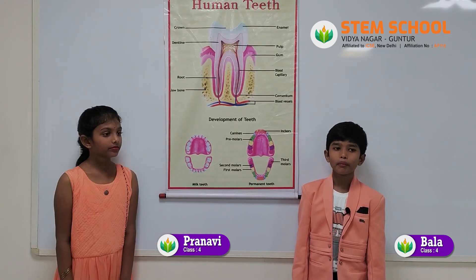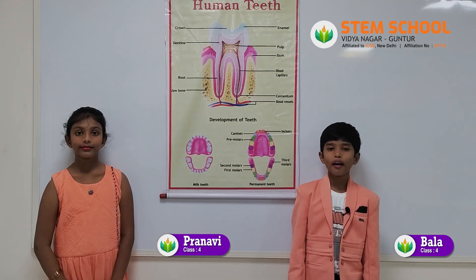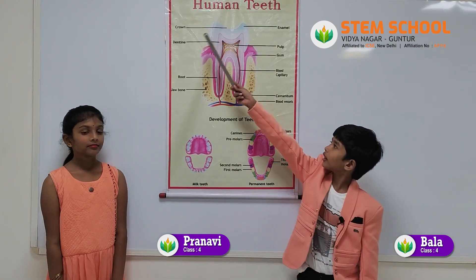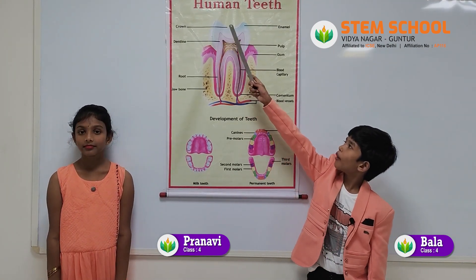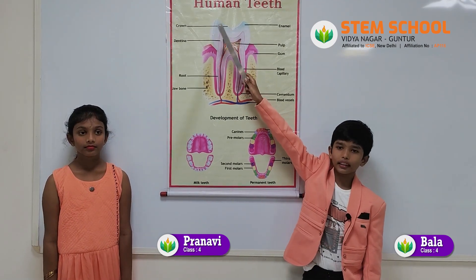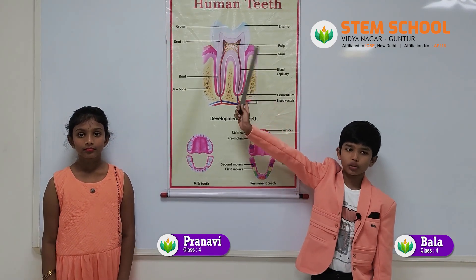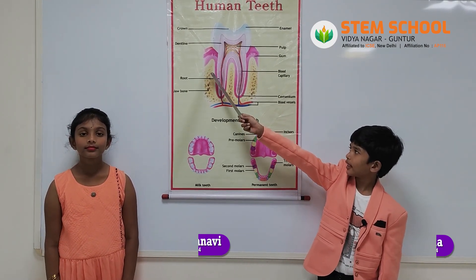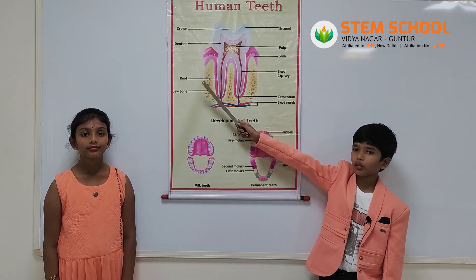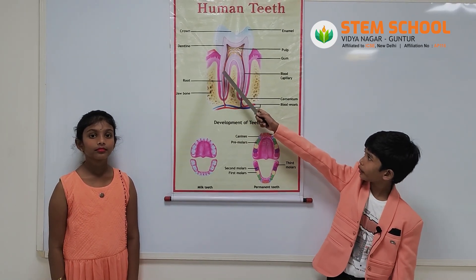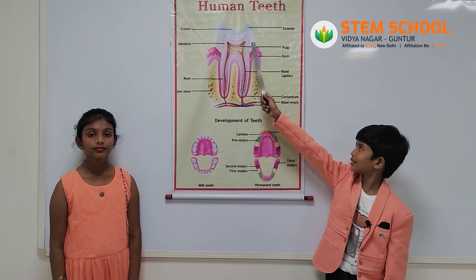Now we will talk about the parts of the tooth. The part of the tooth that can be seen is known as the crown of the tooth, and the part that is hidden inside the gum is known as the root. There is a hole in the root that connects the nerves to the tooth.